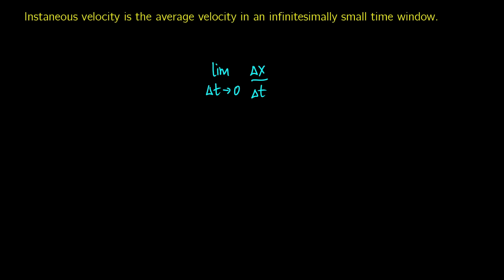To talk about instantaneous velocity, we need some calculus. Instantaneous velocity is looking at the velocity at a point. Imagine you have a curve and you keep zooming in on a point — the line gets straighter and straighter. Eventually the time difference becomes infinitesimally small, like 0.0000. A limit or a derivative allows us to get at that.